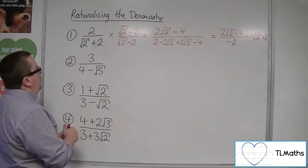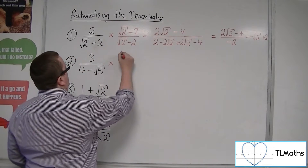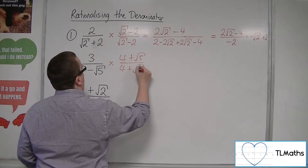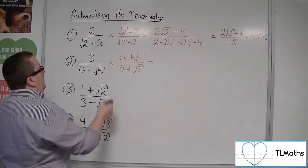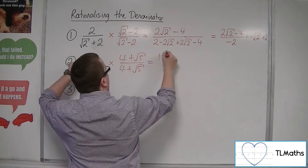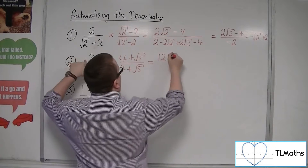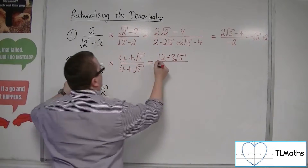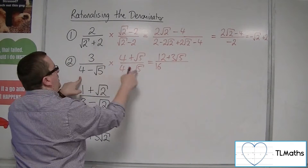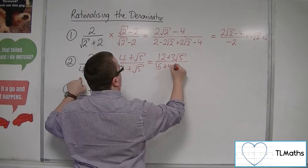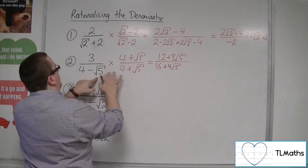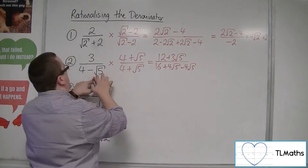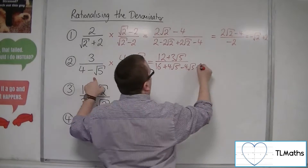For number 2, we're going to multiply top and bottom by 4 plus root 5 over 4 plus root 5. So we're going to have 3 times 4 is 12, and 3 times root 5 is 3 root 5. In the denominator we've got 4 times 4 is 16, and 4 times root 5 is 4 root 5. Then 4 times minus root 5 is minus 4 root 5.